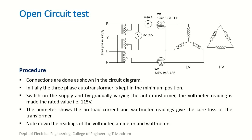Procedure for doing the open circuit test: connections are done as shown in the circuit diagram. Initially the autotransformer is kept in the minimum position. Switch on the supply and gradually vary the autotransformer until the voltmeter reading reaches the rated value of 115 volt. The ammeter shows the no-load current and the wattmeter readings give the core loss of the transformer. Note down the readings of the voltmeter, ammeter, and wattmeter.